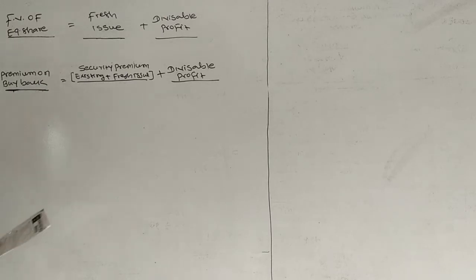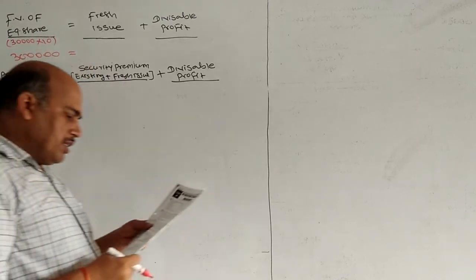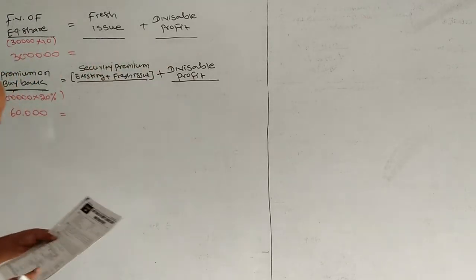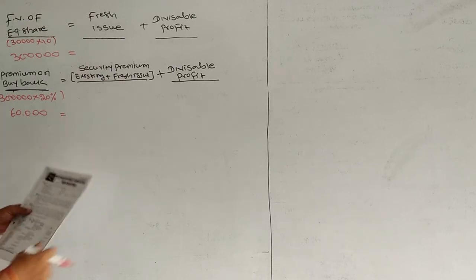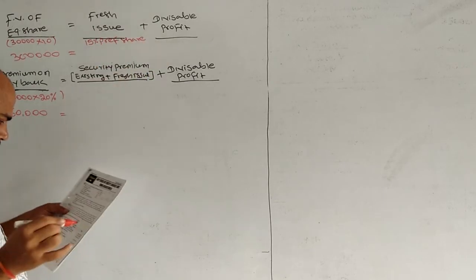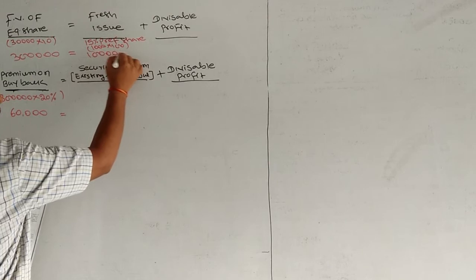So the instruction given here - number of shares is 30,000 shares at rupees 10 each. So we are going to buyback 3 lakhs rupees worth. At what rate? At 20% premium. 3 lakhs plus 20%, which is 60,000. Now where will this 3 lakhs rupees come from? Fresh issue and free reserves. In fresh issue, what did it say? 1,000 15% preference shares at 100 rupees each. That becomes 1 lakh rupees.